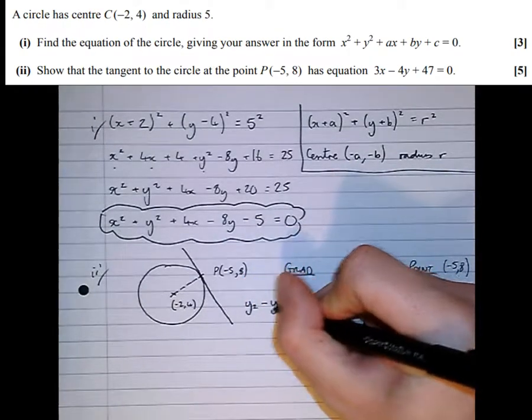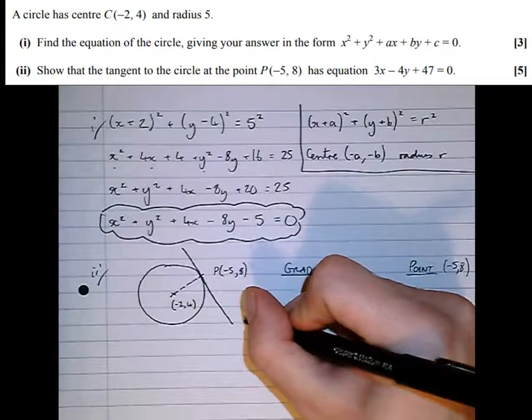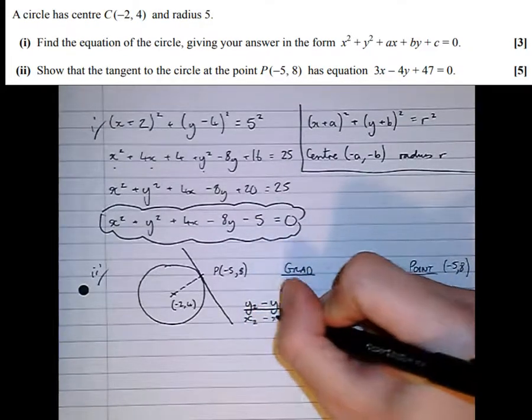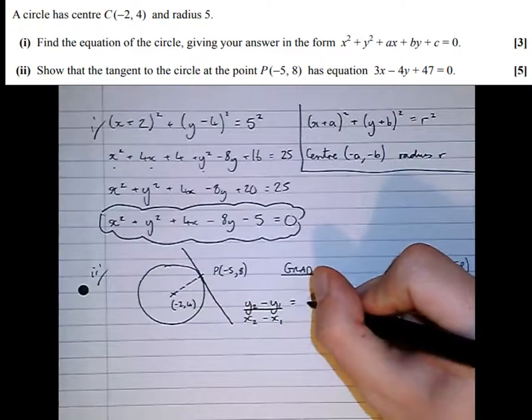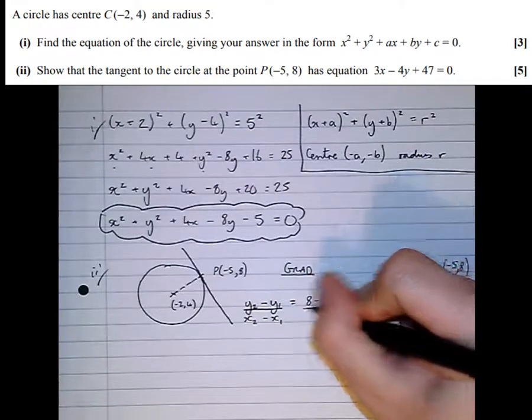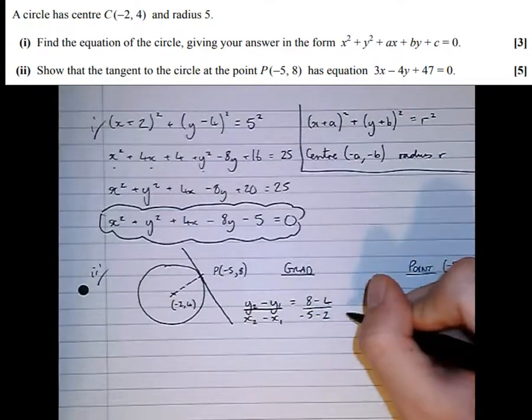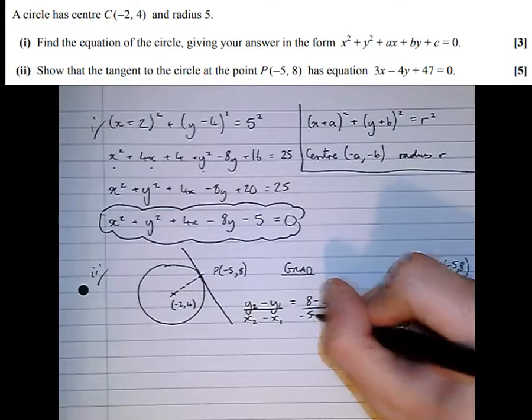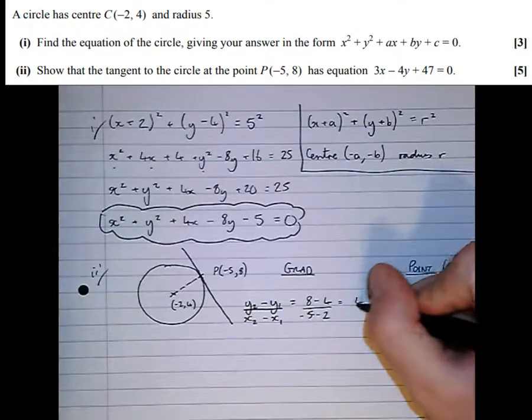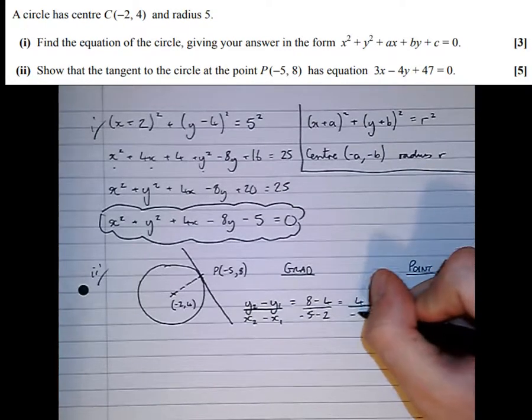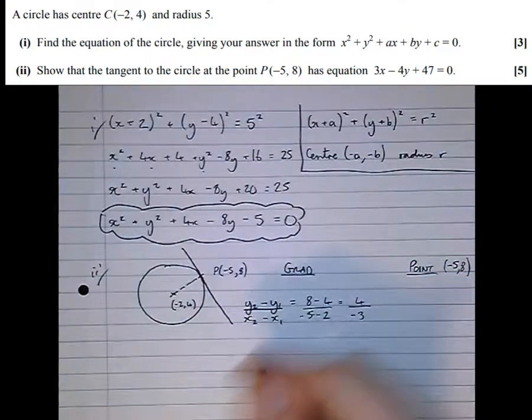We find this by calculating the y-difference over the x-difference, which is (8-4) over (-5-(-2)), or rather -5 minus (-2), which gives us 4 over -3.